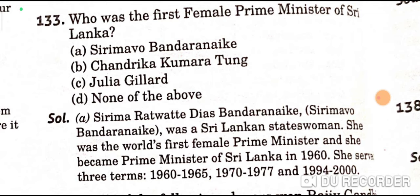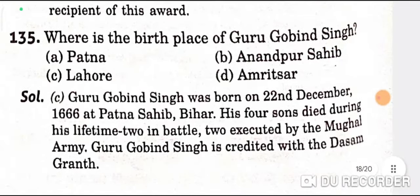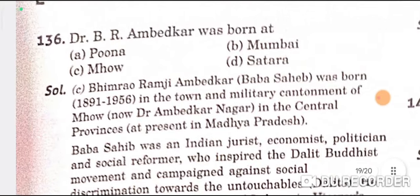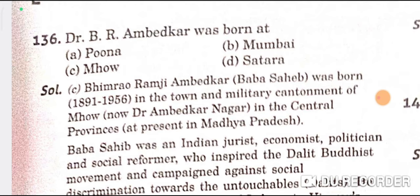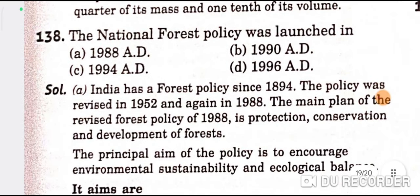The player who won the Rajiv Gandhi Khel Ratna for 2020 in cricket is Rohit Sharma — B is the correct option. The birthplace of Guru Gobind Singh is Patna — C is the correct option. Dr. B.R. Ambedkar was born at Mhow — C is the correct option. Which planet has the shortest day? Jupiter — A is noted, though the answer given is Earth. The National Forest Policy was launched in 1988 — A is the correct option.